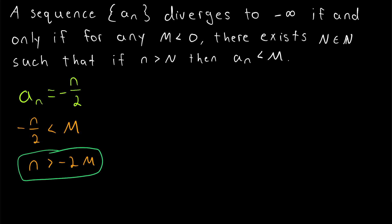Then we can use this condition for our proof. Then we'll begin with let M be less than 0. So M is just an arbitrary fixed negative number. Then what are we going to say for our big N value?